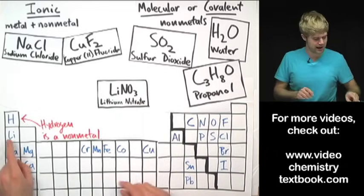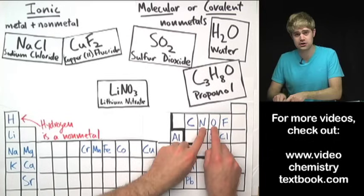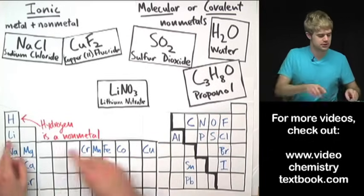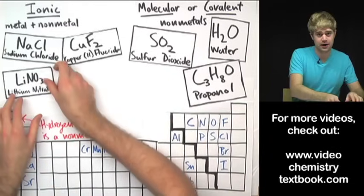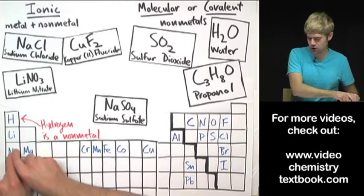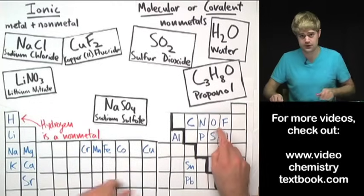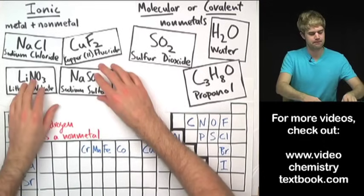Here's another example. Lithium nitrate has lithium which is a metal, but then it also has nitrogen and oxygen which are both non-metals. So it's still got the metal, non-metal thing going on, so it's an ionic compound even though it has two non-metals. And the same thing is true of sodium sulfate. It's got sodium, a metal, and two non-metals, sulfur and oxygen. But metal, non-metal means it's ionic.